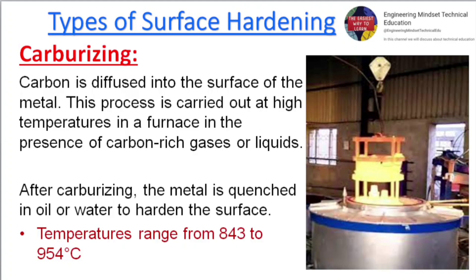Carburizing: Carbon is diffused into the surface of the metal. This process is carried out at high temperatures in a furnace in the presence of carbon-rich gases or liquids. After carburizing, the metal is quenched in oil or water to harden the surface. Temperatures range from 843 to 954 degrees Celsius.